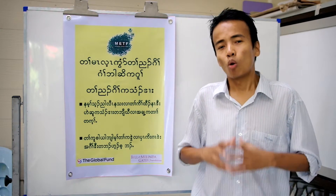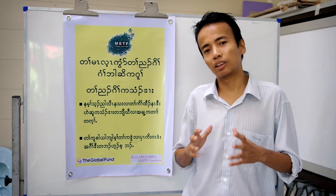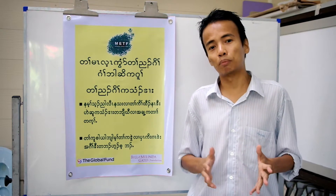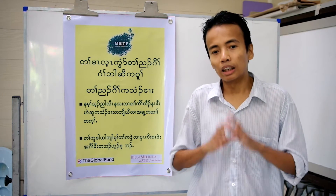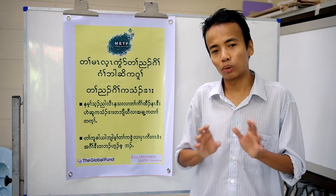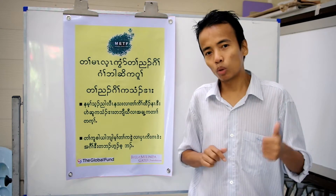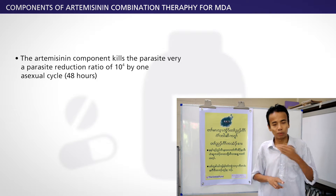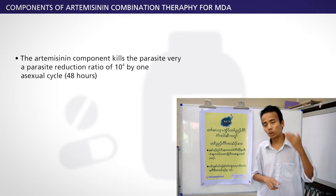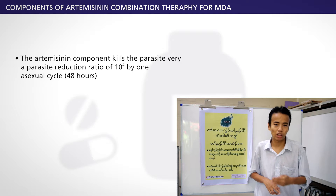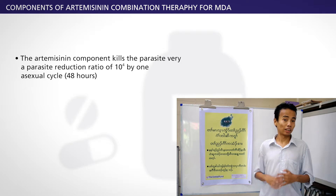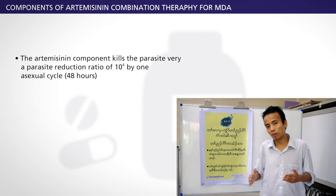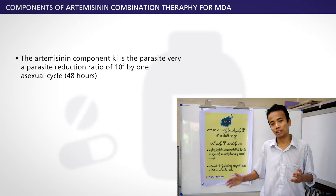Why do we choose the artemisinin combination therapy for mass drug administration? We choose the artemisinin combination therapy because it has two components. One component is the artemisinin component, which kills the parasite very rapidly — with a parasite reduction ratio of 10 to the power of 4 per 48-hour asexual cycle. Then the residual parasite will be mopped up by the partner drug.